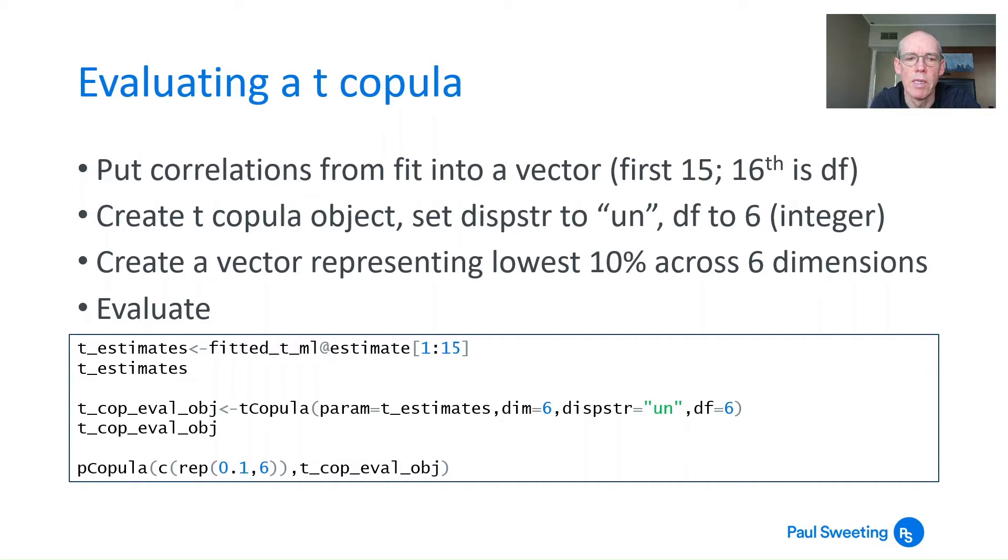If I wanted to store this number, I'd create something called t_cop_eval_result, then a left arrow and a line, and put that before pCopula. Then I'll stick the results from this analysis into an object, which would be a single cell giving me the probability.